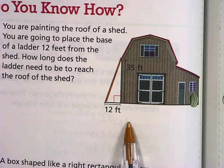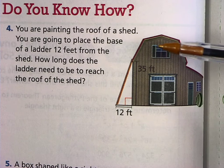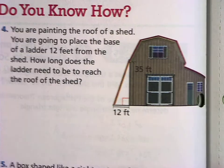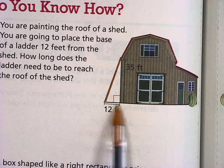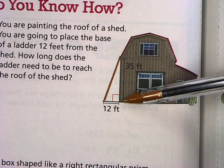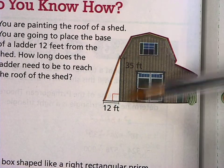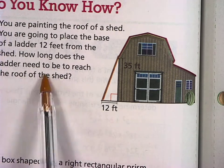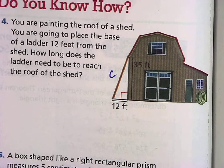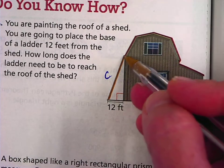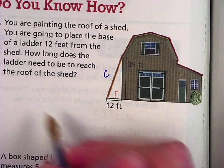We've got this barn. It says you're going to paint the roof of a shed, and you're going to place the base of the ladder 12 feet from the shed. So you've got the base of the ladder 12 feet from the shed, and this part of the building is 35 feet tall. How long does the ladder need to be? So you're missing your length of your hypotenuse, basically. How long does the ladder need to be to reach the top of the shed? Let's plug this in.